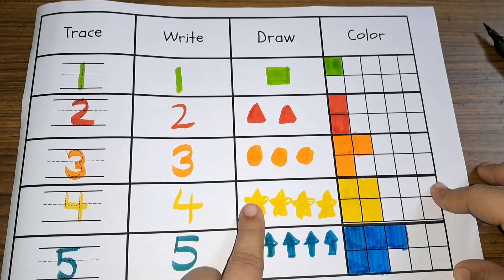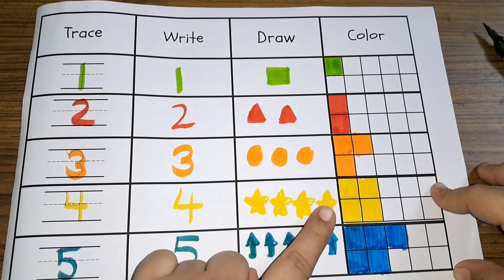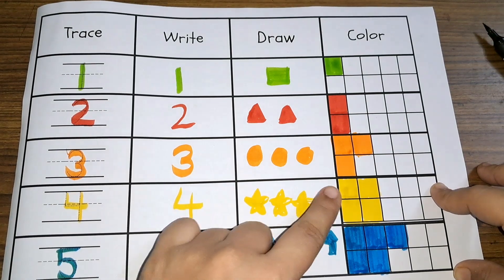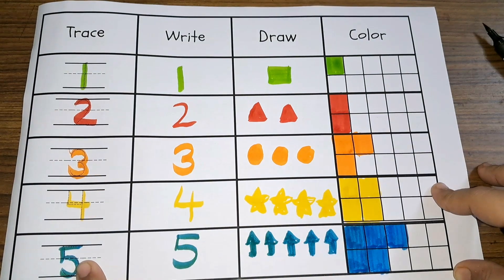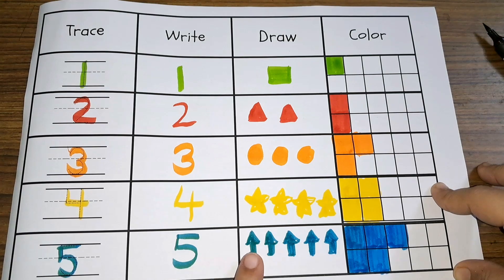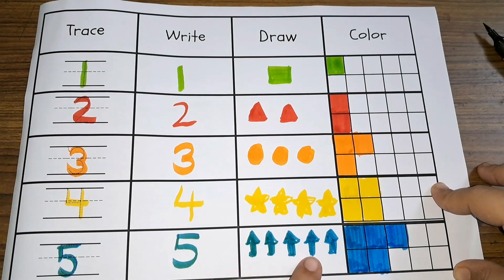2, 3, 4. 4 stars, 4 yellow color. 5, 5, 5. 1, 2, 3, 4, 5. 5 arrows, 5 blue color.